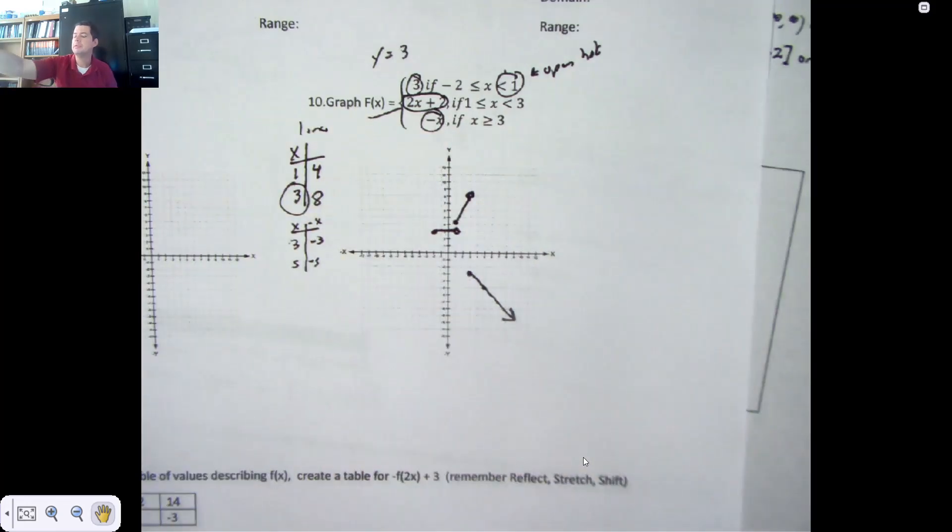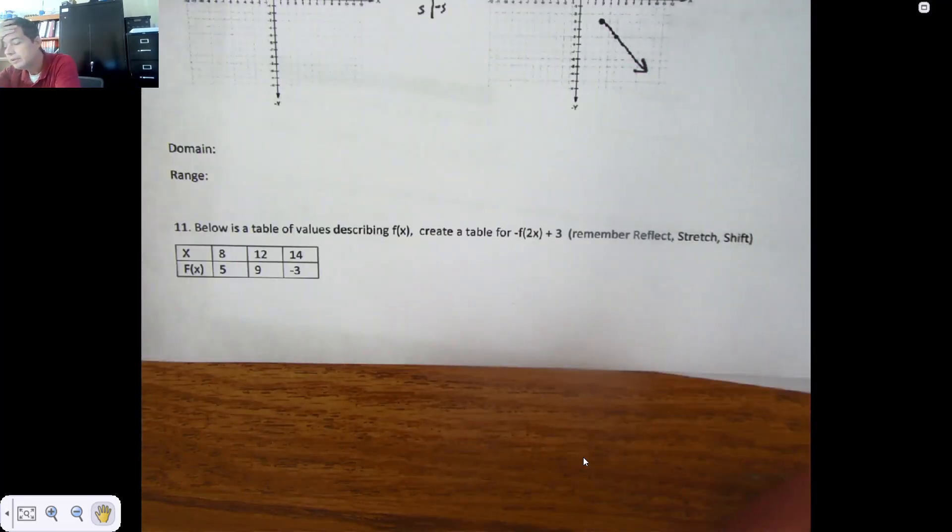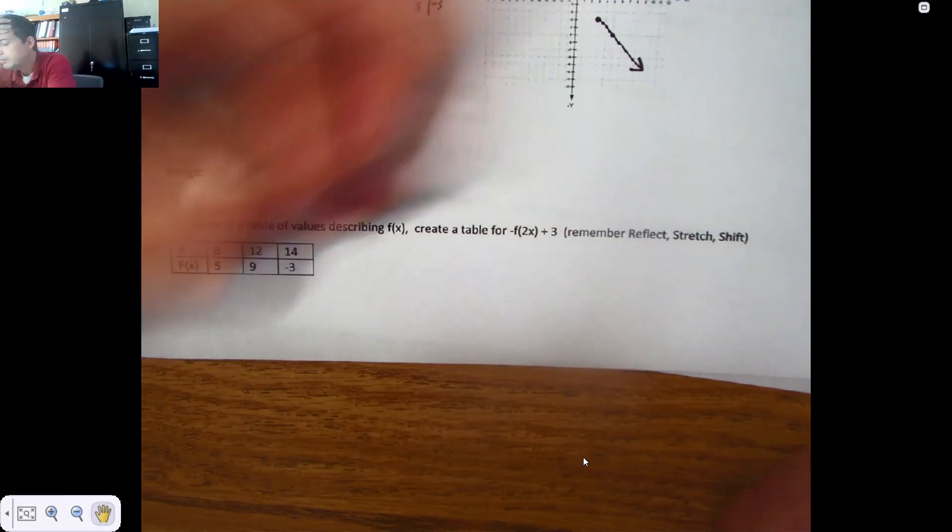Oh, there's one more. It's the bonus. There is a table of values that describes f of x, and you're supposed to create a table for negative f of 2x plus 3. And I would do this in multiple parts. You reflect, you stretch, you shift. So the first thing I'm going to do is I'm going to make a small table for the reflection.